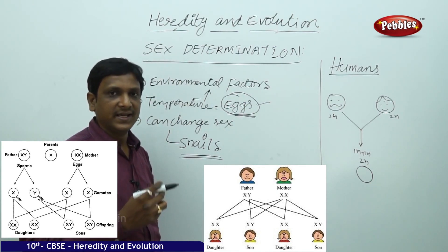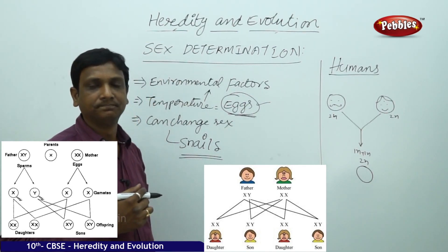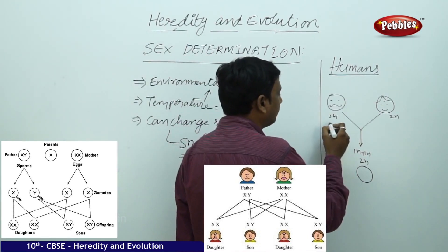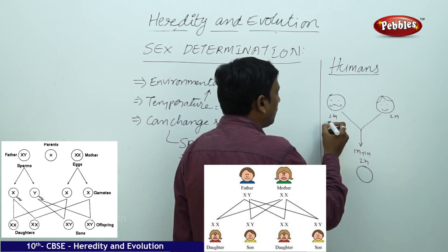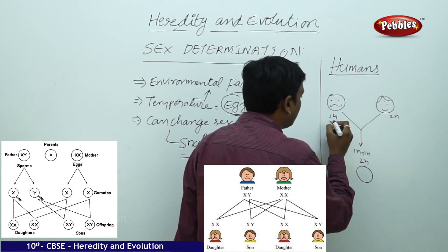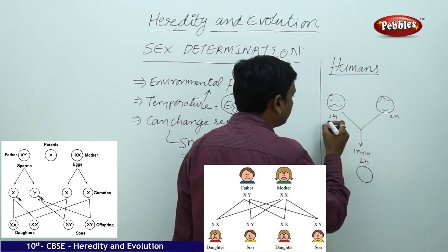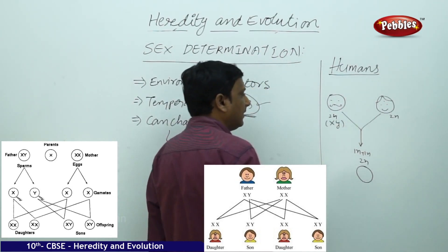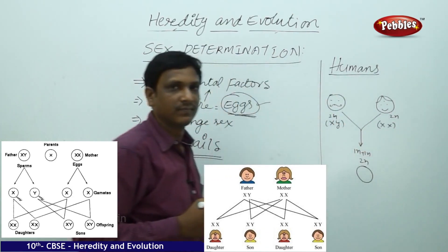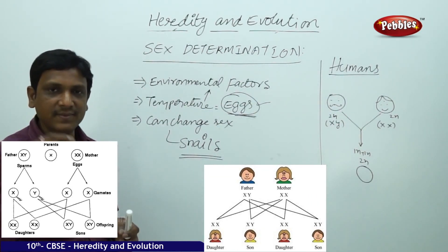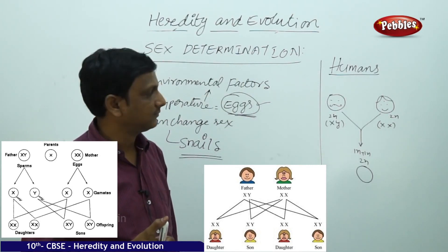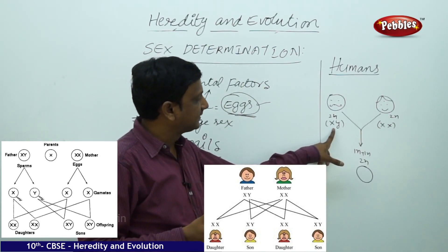In the father's body, the reproductive cell of the male will have two genes that determine the sex: X and Y. In the mother, both are X. So the character of female is represented by XX in the mother, and in the father it is X and Y.